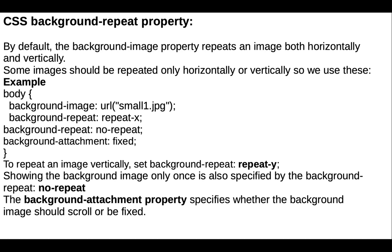We can also add background properties like background repeat. The background image property repeats an image both horizontally and vertically. Some images should be repeated only horizontally or vertically. We use repeat-x for horizontal and repeat-y for vertical. If you don't want to repeat the image, use the value 'no-repeat'. There is also the background attachment property with values 'fixed' or 'scroll', which specifies whether the background image should scroll or be fixed.